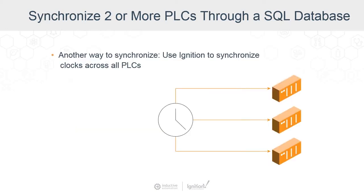Another common form of synchronization customers do with transaction groups is synchronizing clocks across all different PLCs. PLCs don't inherently communicate to time servers, so when switching between daylight saving and standard time, Ignition running on a machine can communicate to a time server and synchronize the time across all PLCs. Keeping those clocks synchronized — whether when values drift out of sync or on a continual basis — is another great use case. A transaction group is used for each PLC to synchronize the clock.